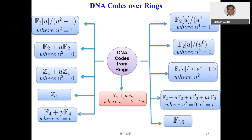For DNA codes from rings: various rings have been used for construction. The general approach is to take a ring, construct a code over that ring, and then apply a map — a chain map — from every element of the ring to a string of ACGT. Different maps are available. For the ring Z4 plus omega Z4, in most of the literature DNA codes have been constructed using these maps, but many times they do not ensure high-distance codes because the map is not an isometry. Here, with omega^2 = 2 + 2*omega, we can find an isometry — that is the interesting result.